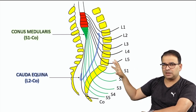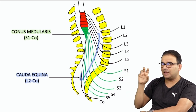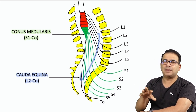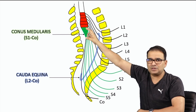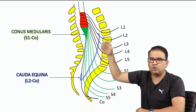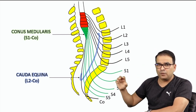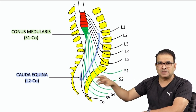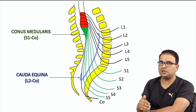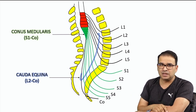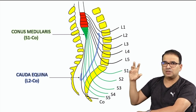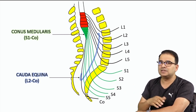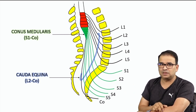By looking at this, we can understand that injury to the conus medullaris is more of a central nervous system type of injury — more like an upper motor neuron lesion. Whereas in cauda equina, it is clearly an injury to the nerves themselves, so the features correspond to a peripheral nerve type of injury. Based on this anatomy, we can now discuss the features of both syndromes.